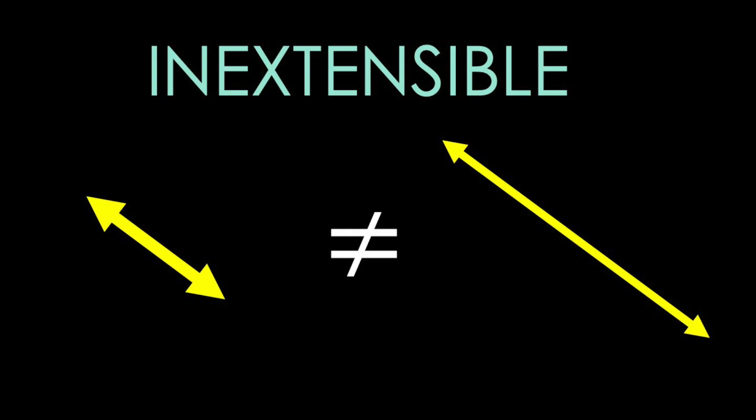Cables are inextensible. That means that if you have a cable and you pull on it, the length of that cable does not change. This assumption is great because it lets us use simple geometry to solve our problems.